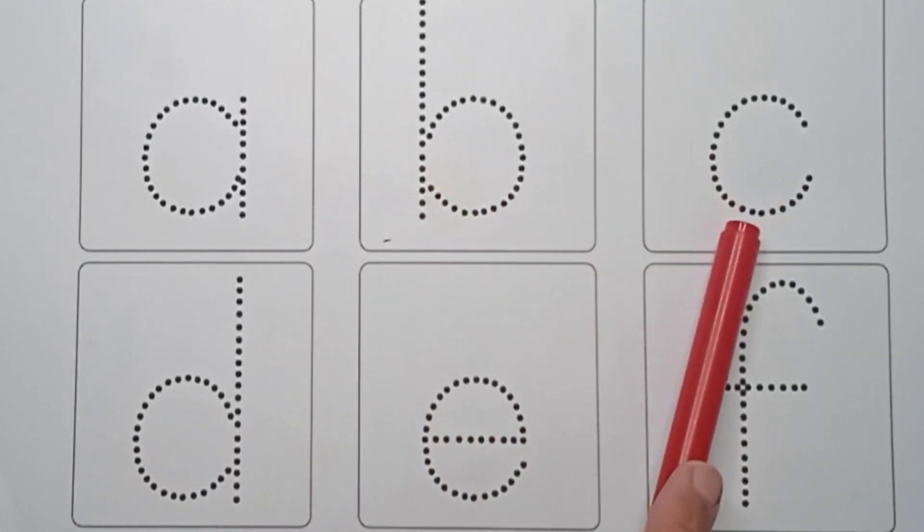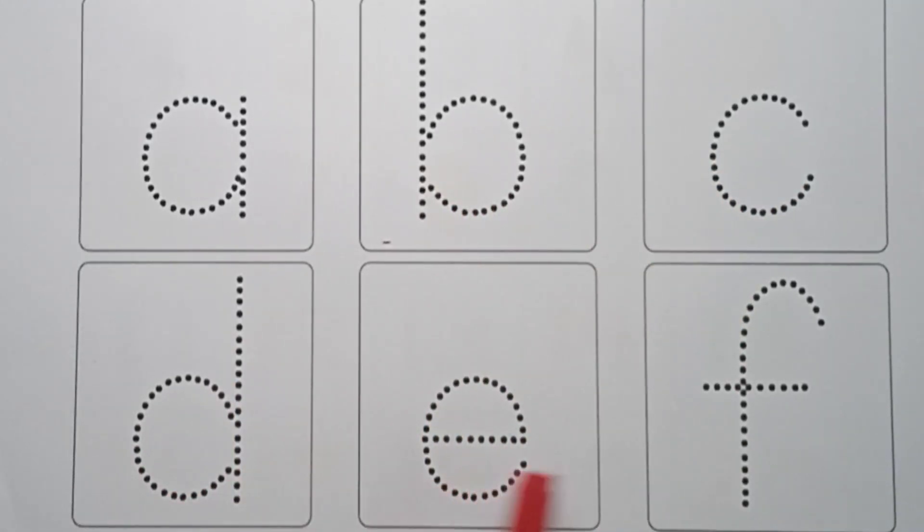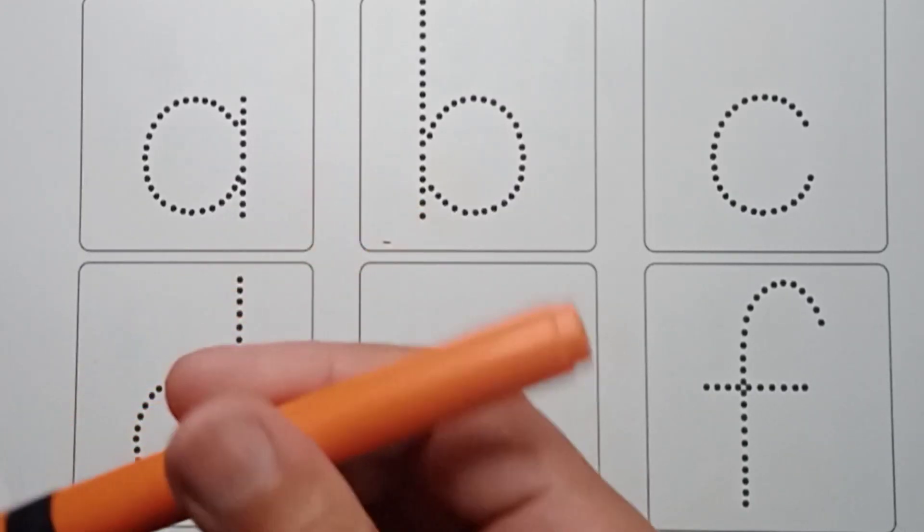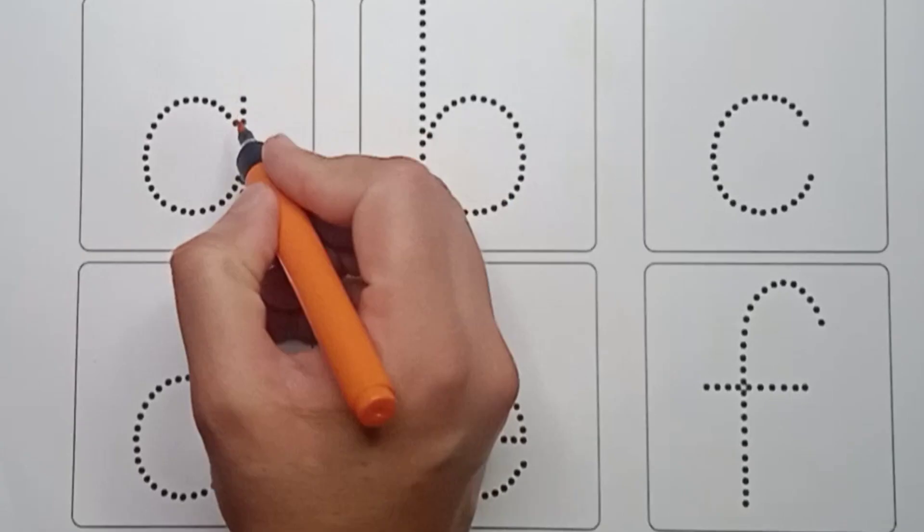A, B, C, D, E, F. So kids, today we will learn about small alphabets A to F. So let's start it. It's orange color.